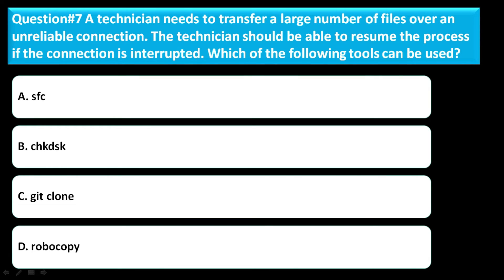Question number seven: a technician needs to transfer a large number of files over an unreliable connection. The technician should be able to resume the process if the connection is interrupted. Which of the following tools can be used? Option A: SFC. Option B: CHKDSK. Option C: git clone. Option D: robocopy. The correct answer is option D — robocopy.